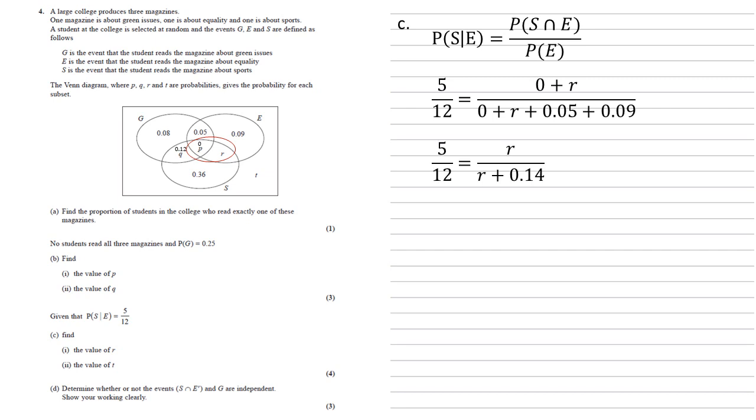Simplifying this, we get that 5/12 is equal to R over R plus 0.14, and then cross multiplying. So multiplying both sides by the 12, multiplying both sides by the R plus 0.14, we get that five lots of R plus 0.14 equals 12R. So 5R plus 0.7 equals 12R. So 7R is 0.7 and R is equal to 0.1.